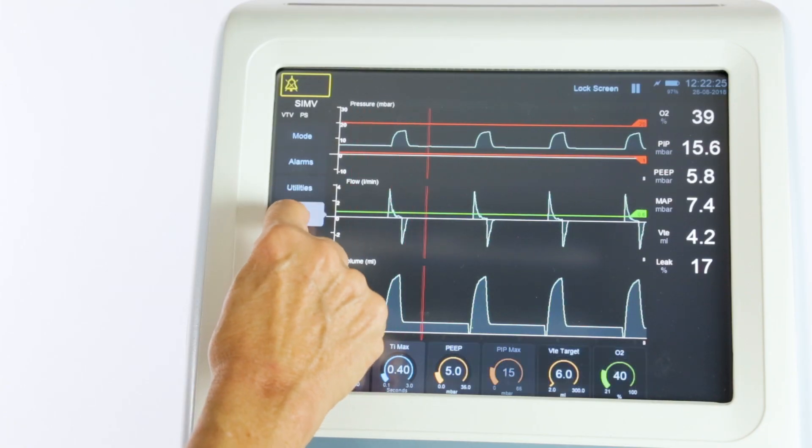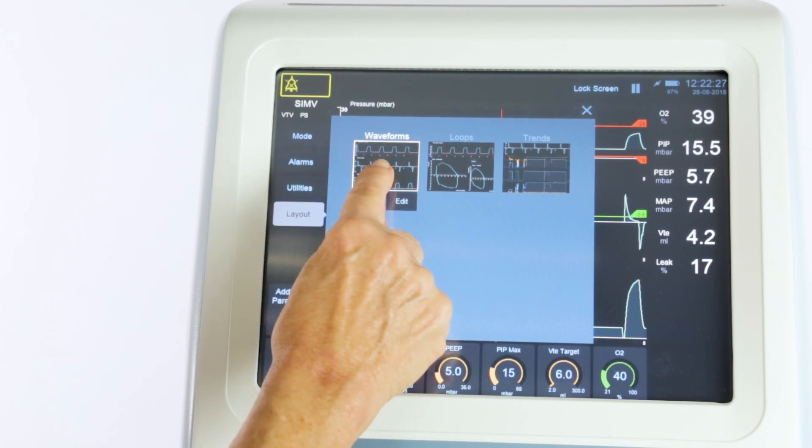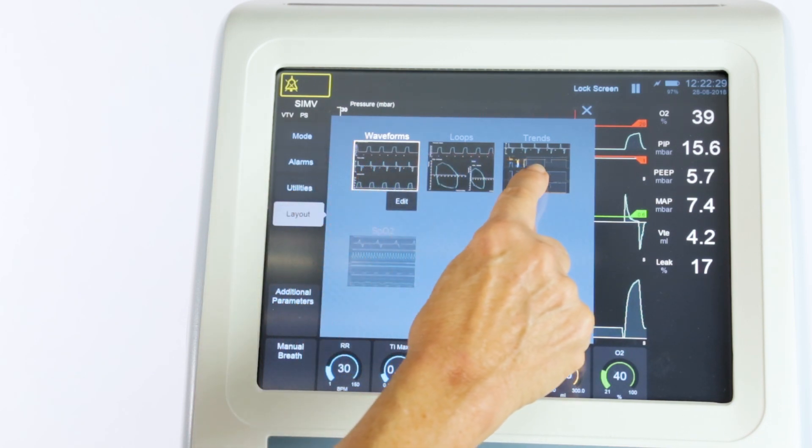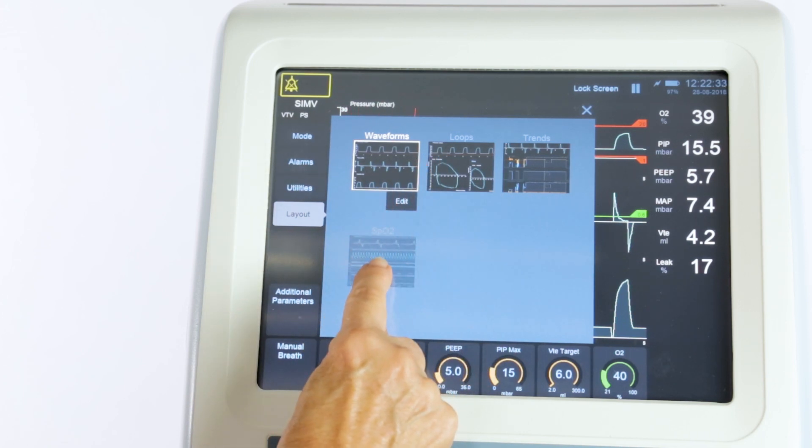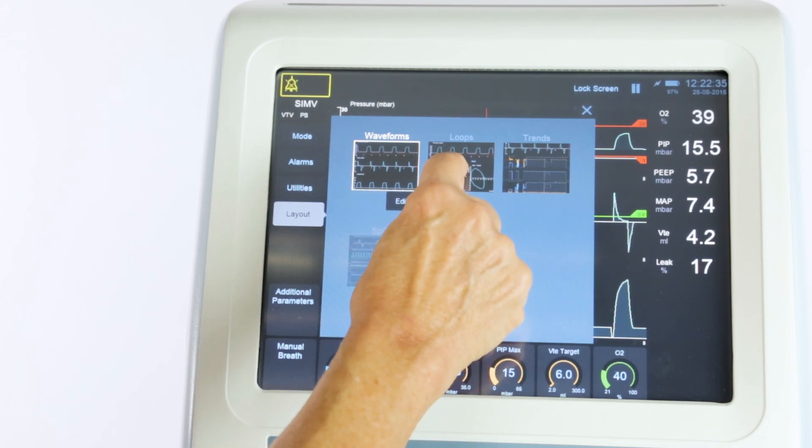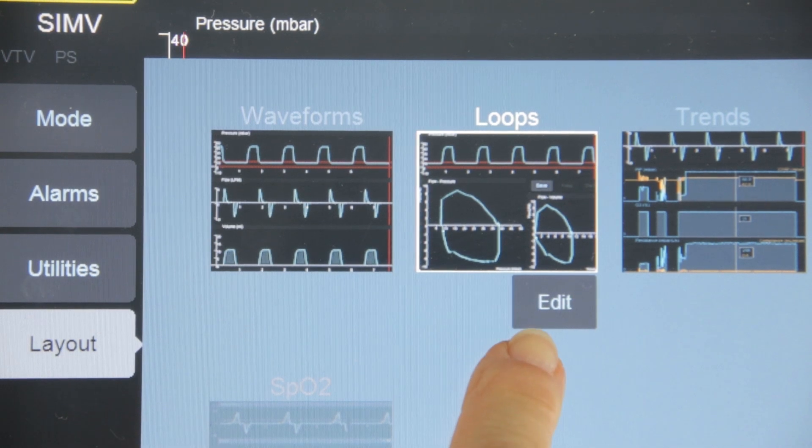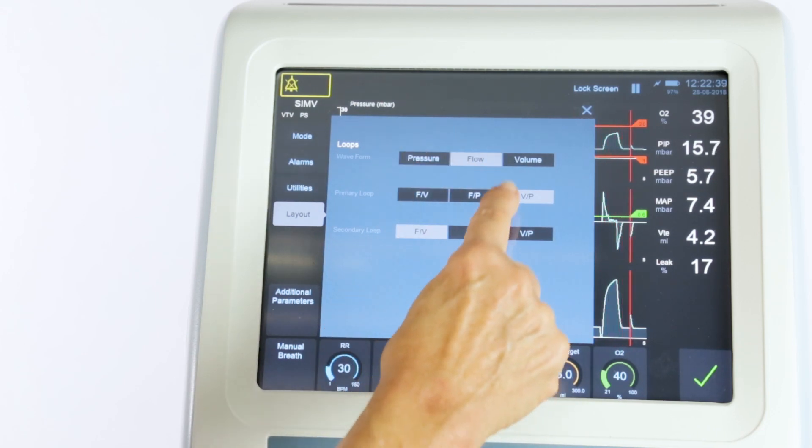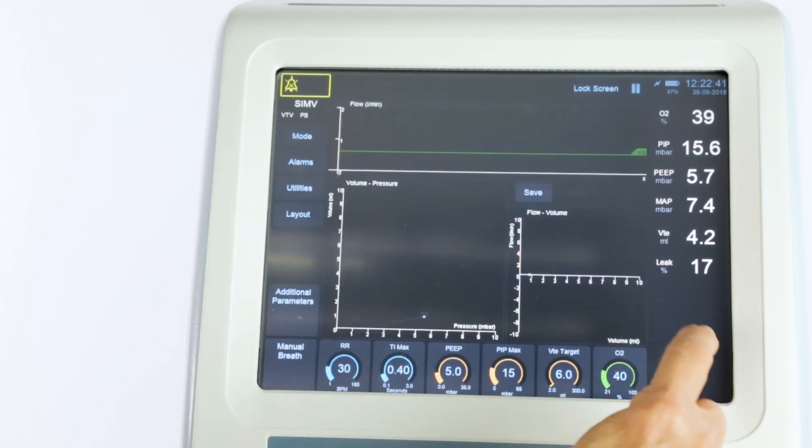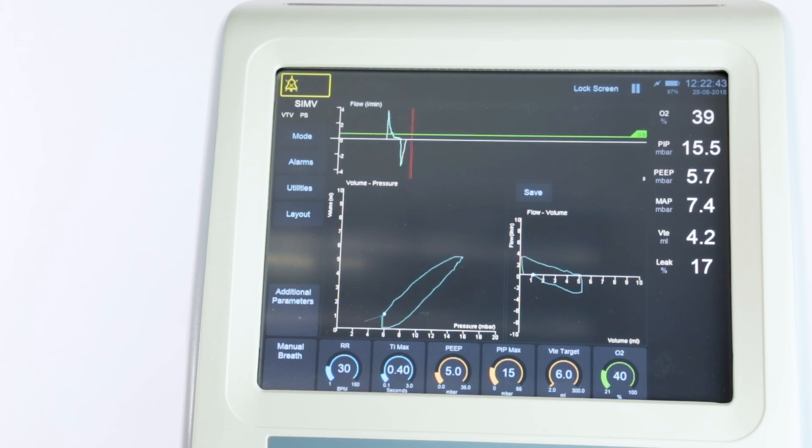The Layout button gives access to a page which allows you to switch between various screen layouts, including waveforms only, trends, loops and SPO2 if installed. When one of these buttons is selected, a small Edit button appears beneath it. Selecting this allows you to modify that particular screen before confirming it, and pressing the Tick button will cause the ventilator to show an alternative layout.